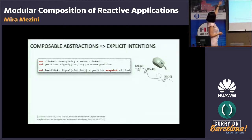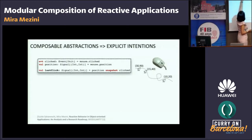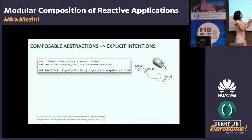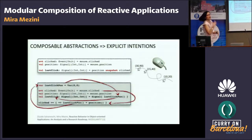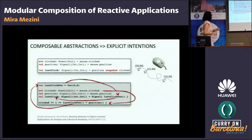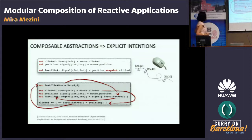There are more operators like 'snapshot'. Here there is an event 'clicked' and a signal 'position' declared. I create a new signal 'last-click' which depends on both — it's kind of a subset of the values in the position signal: only those values are taken when we have a click event triggered. If I didn't have these higher-level operators for composing those two things, I would have to resort back to using callbacks and get, again, this interwoven control flow.